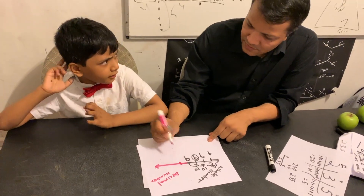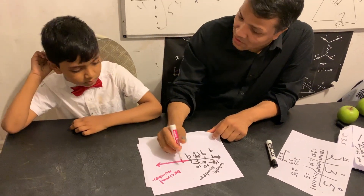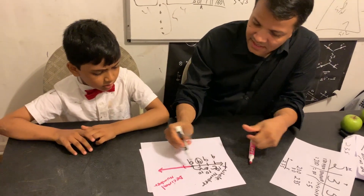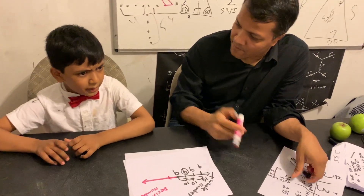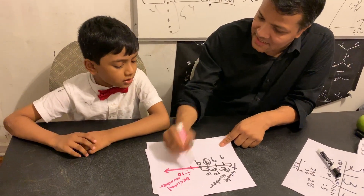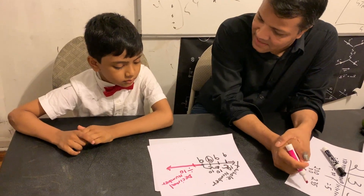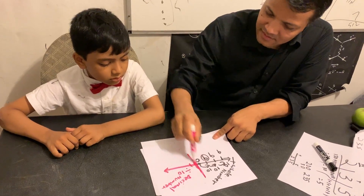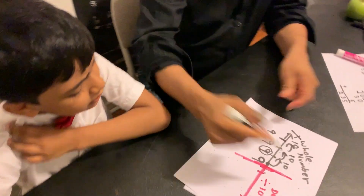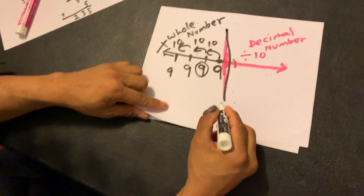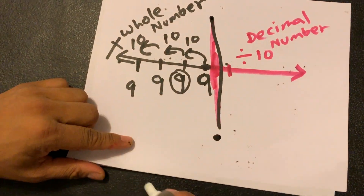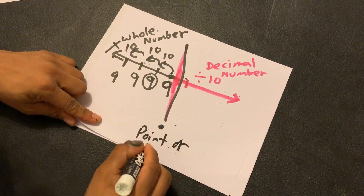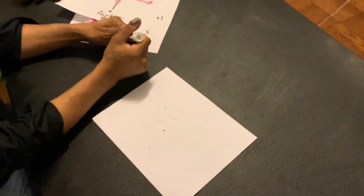So moving to the right it would be smaller - how much smaller? If it gets bigger by 10 times going left, it should be smaller by dividing by 10 going right. Good. And in the middle, what do you call this divider? That's our decimal point. Can you call it a point of reference?